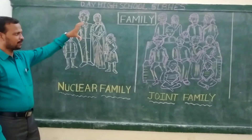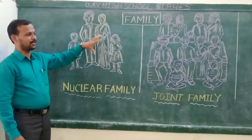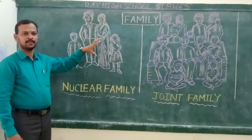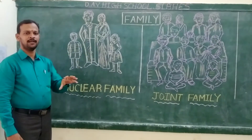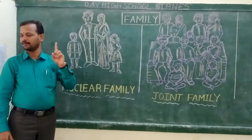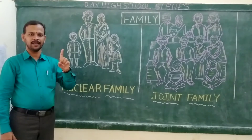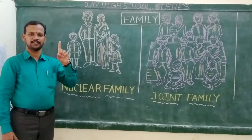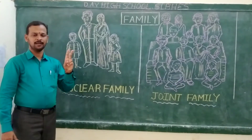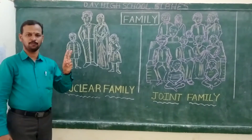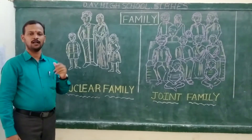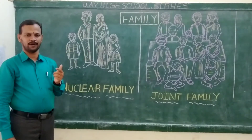The very first unit deals with the family. In the family unit, we can see there are 3 chapters. The very first one is Reading A, chapter Blanket. Reading B is My Mother Home. Reading C is A Letter to a Friend.